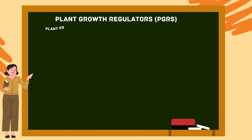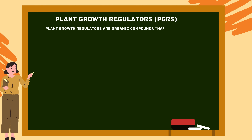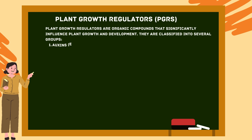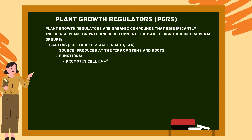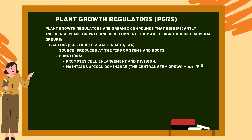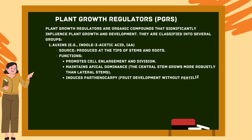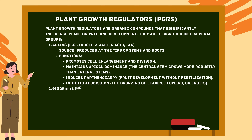Plant growth regulators (PGRs) are organic compounds that significantly influence plant growth and development. Auxins, for example indole-3-acetic acid (IAA), are produced at the tips of stems and roots. Their functions include promoting cell enlargement and division, maintaining apical dominance — where the central stem grows more robustly than lateral stems — and inducing parthenocarpy, which is fruit development without fertilization.